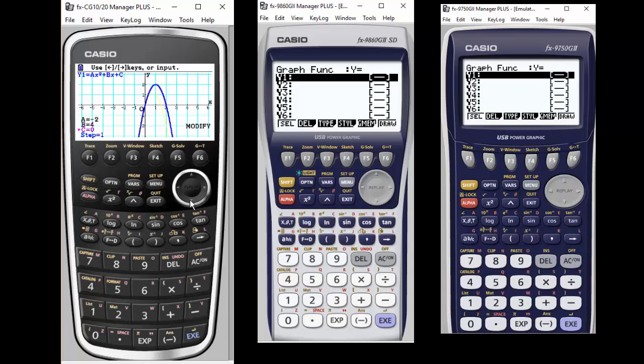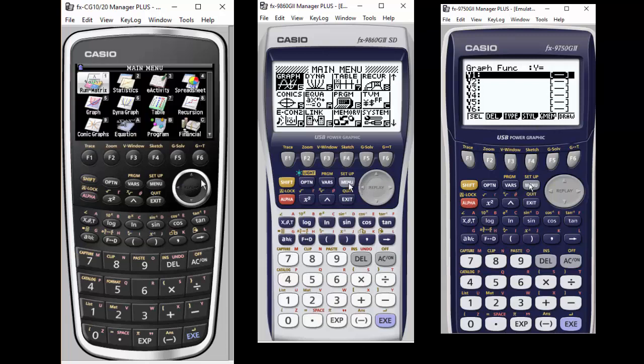Obviously things you need to think about are, do you want color? What size screen do you want? What case do you want more memory? So you would go with the Prism on those cases, but functionality wise, for the most part, they all perform the same.